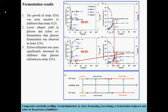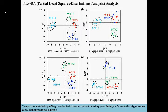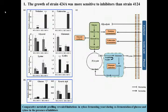In addition, xylose utilization was more significantly decreased by inhibitors than glucose utilization in strain 2-4A. In order to understand the metabolic response of the strain to inhibitors, PLSDA analysis was first used to obtain a global comparison of metabolic profiles of the two strains.